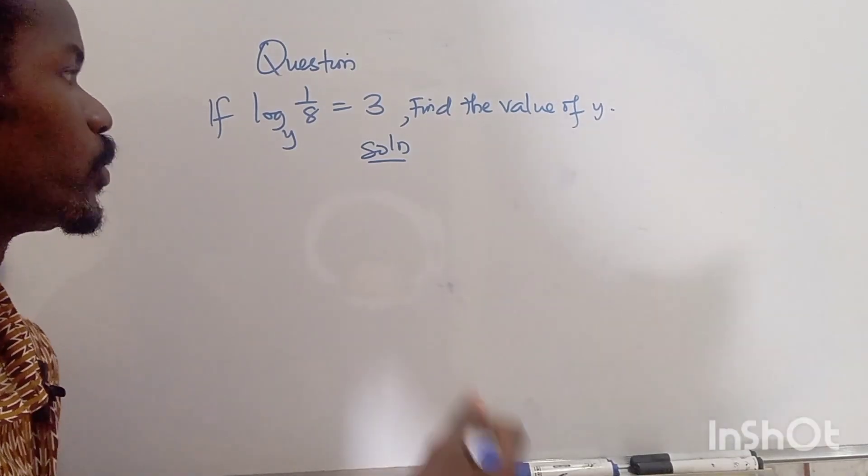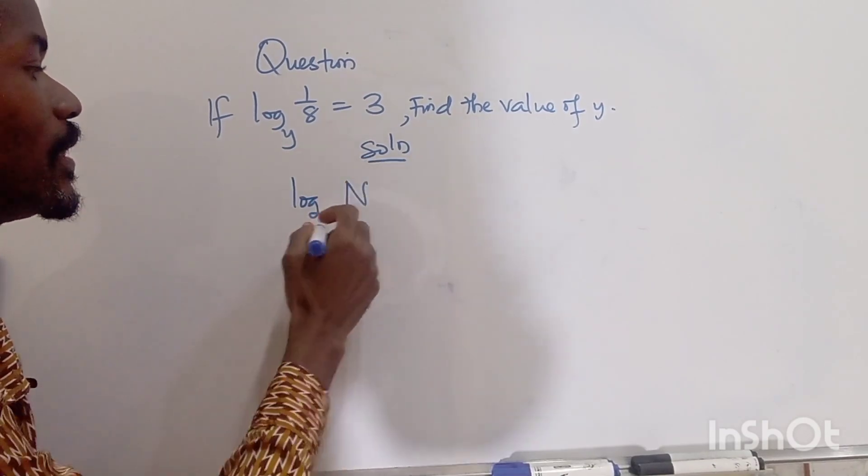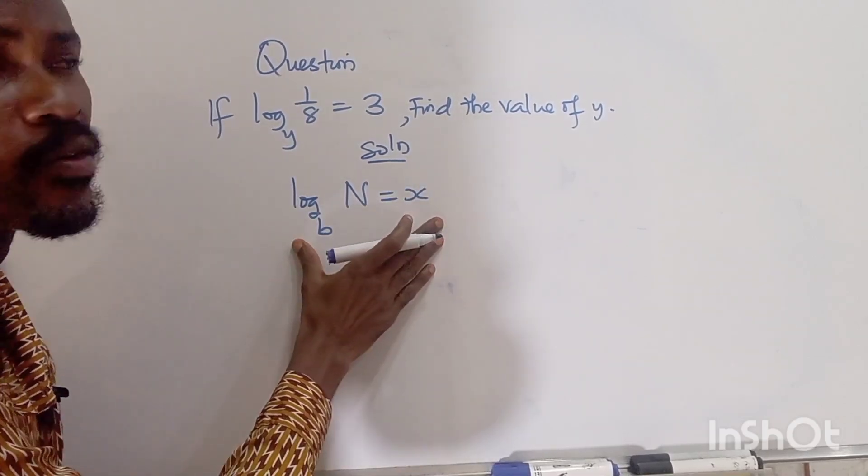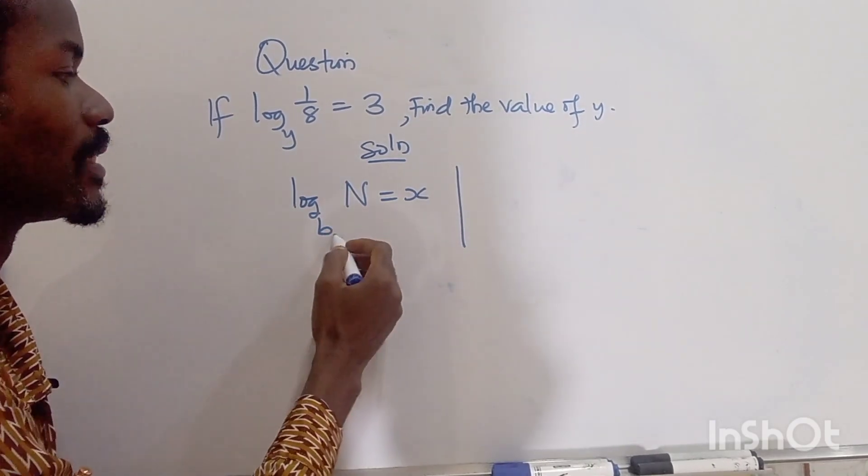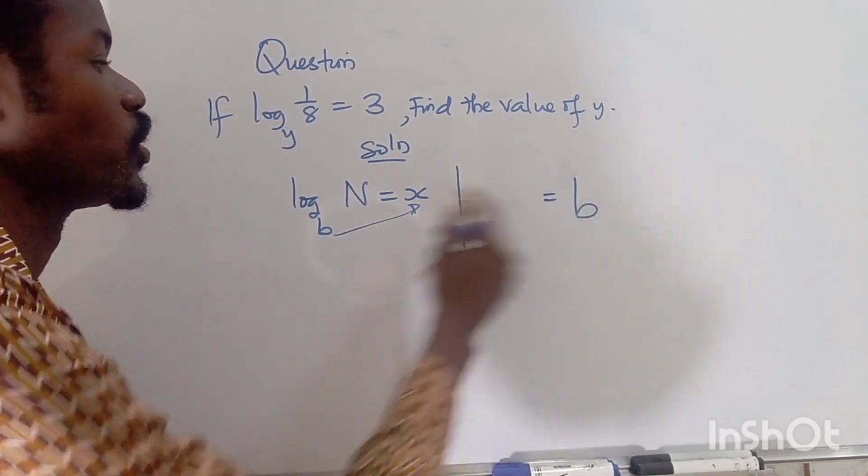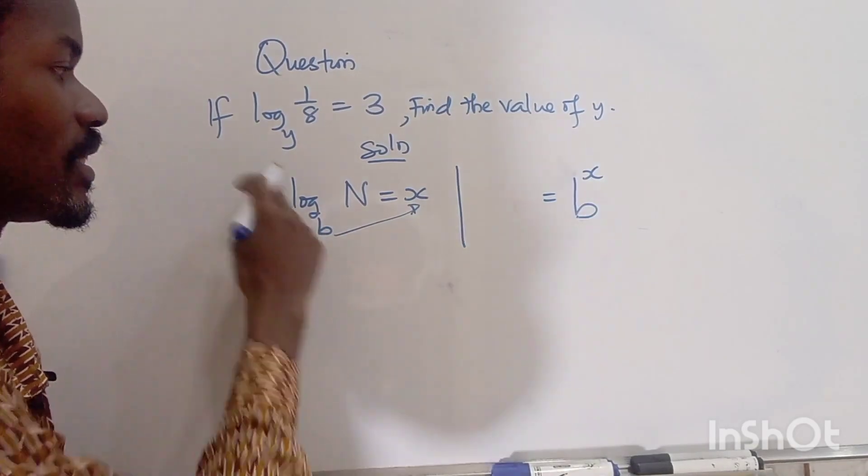So what we'll do in this simple equation: if I have log base b of N equals x, I can convert this to the form of indices. Now this will come here, and if it comes there it's going to push this up to become the power. So this can go out and you are left with N.